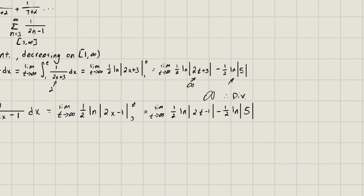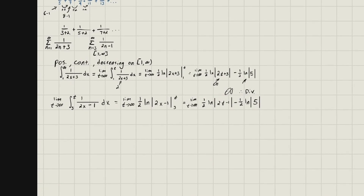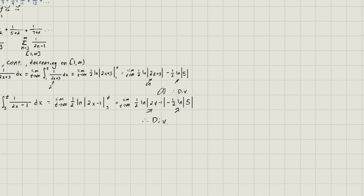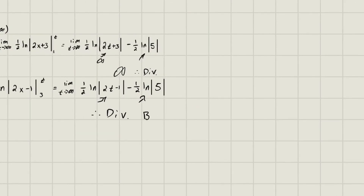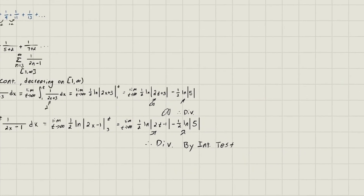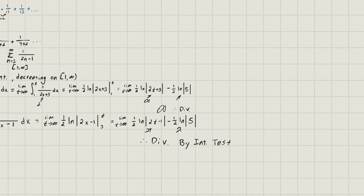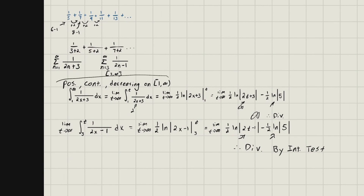We get the exact same result: this is just some finite number, and this part goes to infinity — so we get divergent by the integral test. Both formulations confirm the same answer. The process isn't too complicated: take the integral, if it ends up being a finite number the series is convergent; if it doesn't, it's divergent. Just make sure the conditions hold before applying the test. If you have any questions, leave them in the comments.